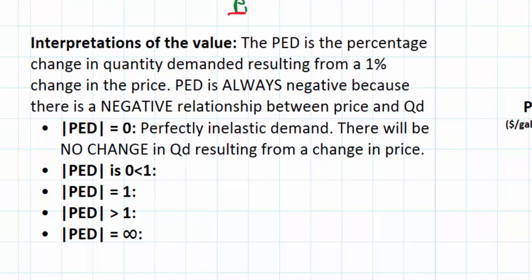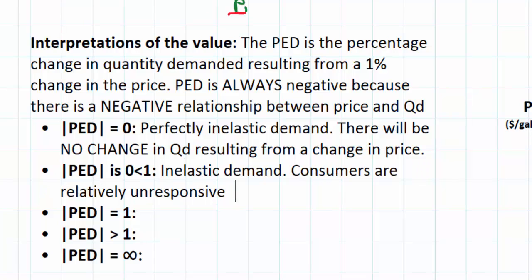What is more common however is what we call inelastic demand or relatively inelastic demand. If the value that we get is less than 1 but greater than 0, demand will be inelastic. This means that consumers are relatively unresponsive to price changes.